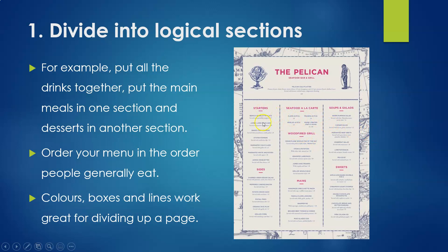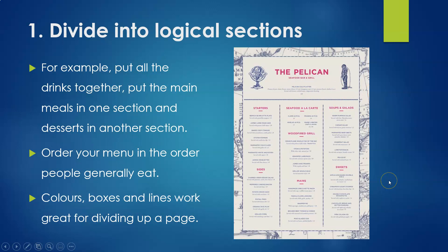You can see the different colored subheadings break up each section well, there are vertical lines breaking up different columns, and there are boxes around the page as well. So this pelican menu here is a fantastic example of how to divide your menu up into logical sections that make sense.